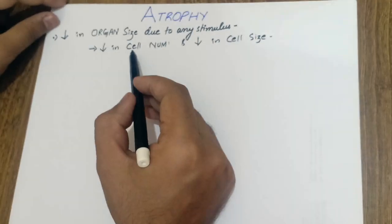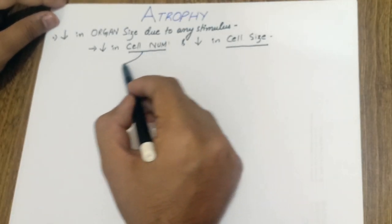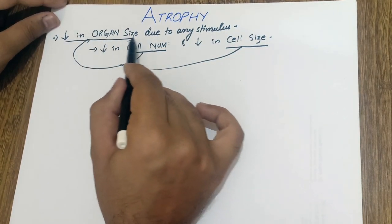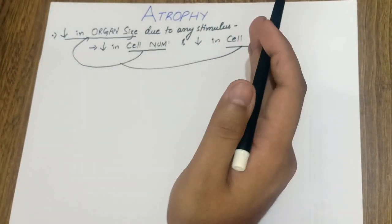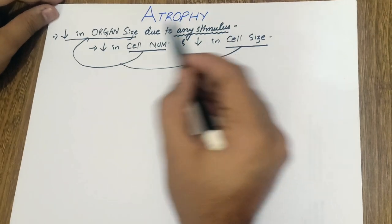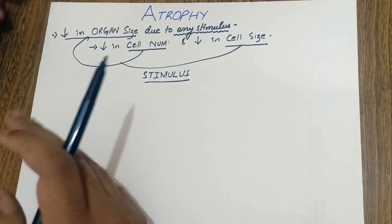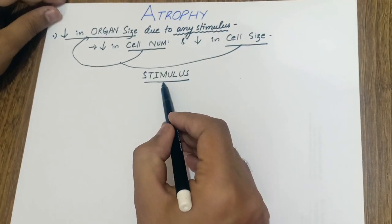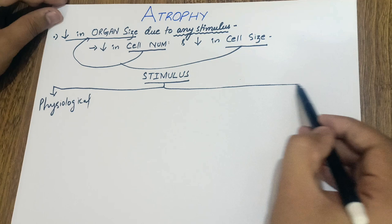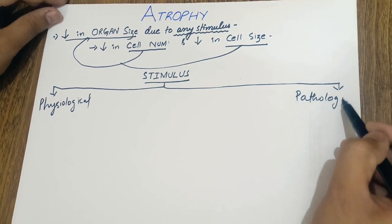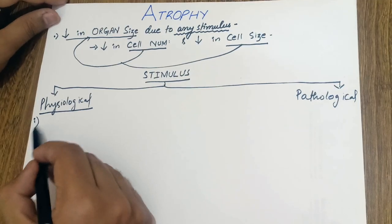When the cell numbers are decreased or when the cell size is decreased, eventually the size of the organ is decreased. Before talking about how cell number and cell size affect organ size, we must talk about the stimulus due to which organ size decreases. There are two kinds of stimulus: the stimulus can be physiological and the stimulus can be pathological.